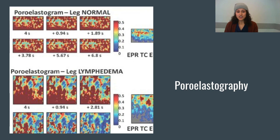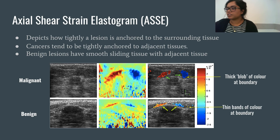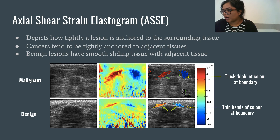A newer technique is axial shear strain elastography. This technique is helpful because it depicts how tightly a lesion is anchored to the surrounding tissue. Cancers tend to be tightly anchored, whereas benign lesions have smooth sliding borders with surrounding tissue. When imaged, thin bands of color at the boundary of a mass are shown for a benign lesion, and a thick blob of color is shown at the boundary of cancerous lesions. Axial shear strain elastography images may be easier to interpret than normal elastograms.